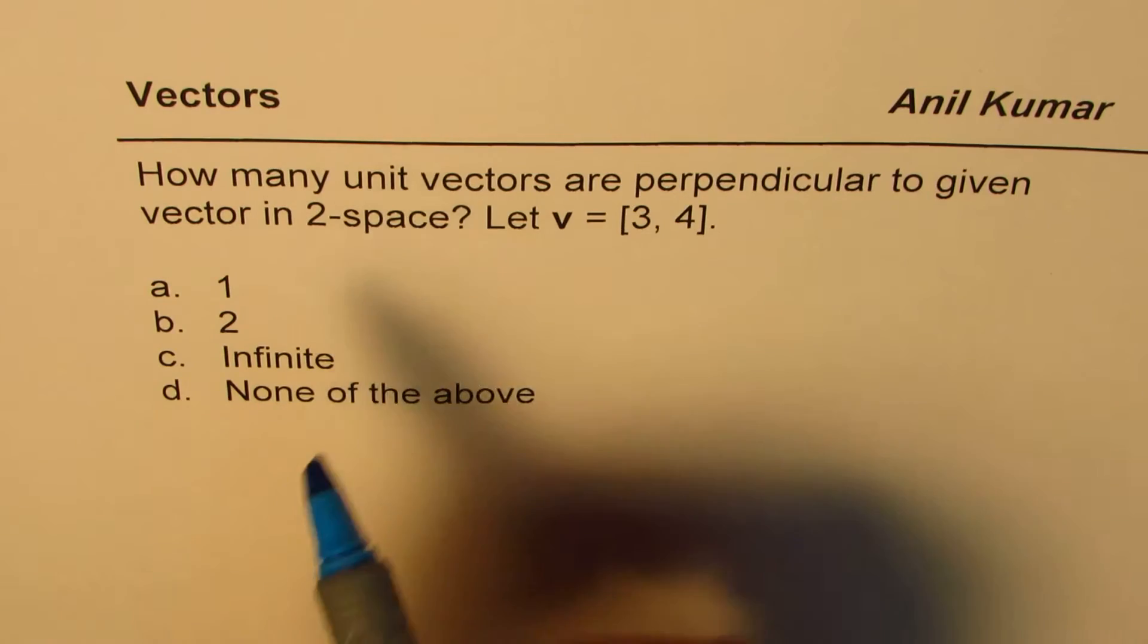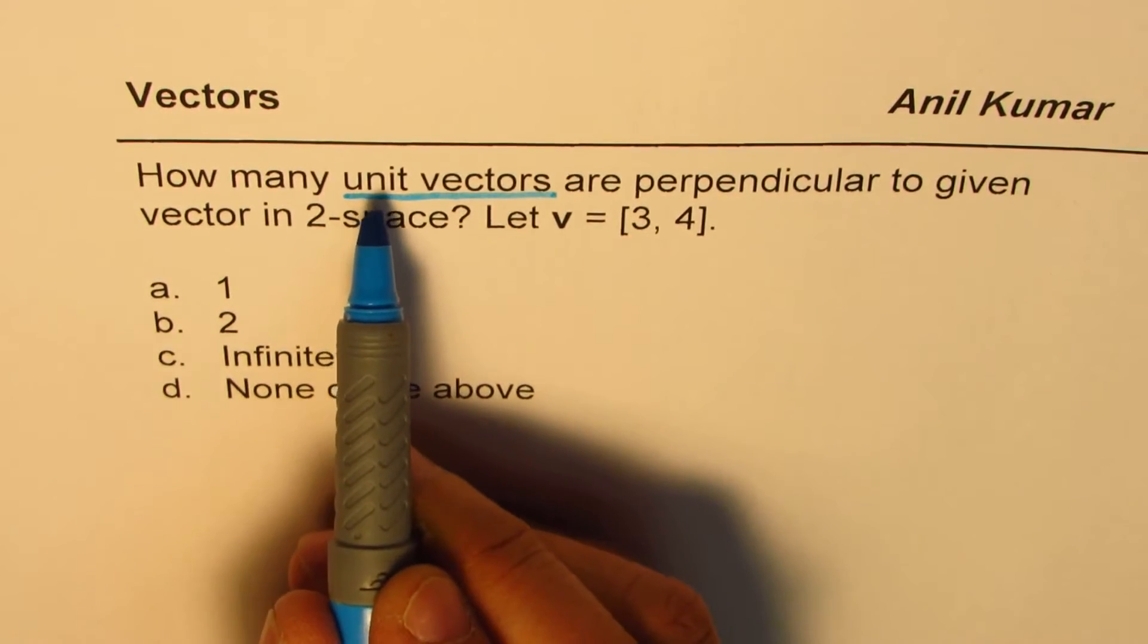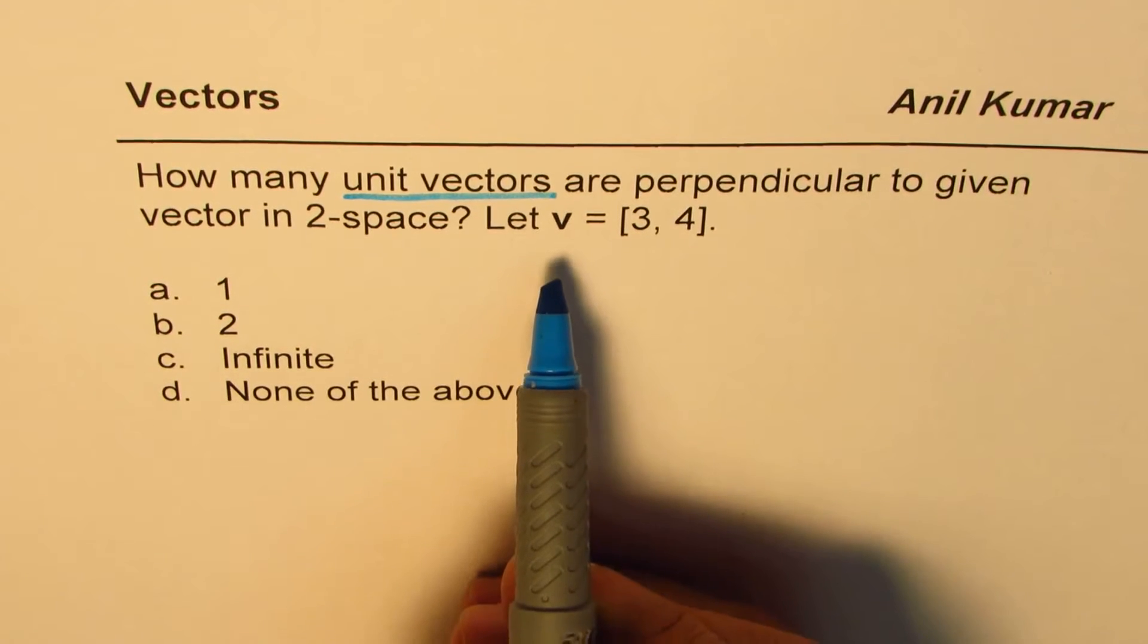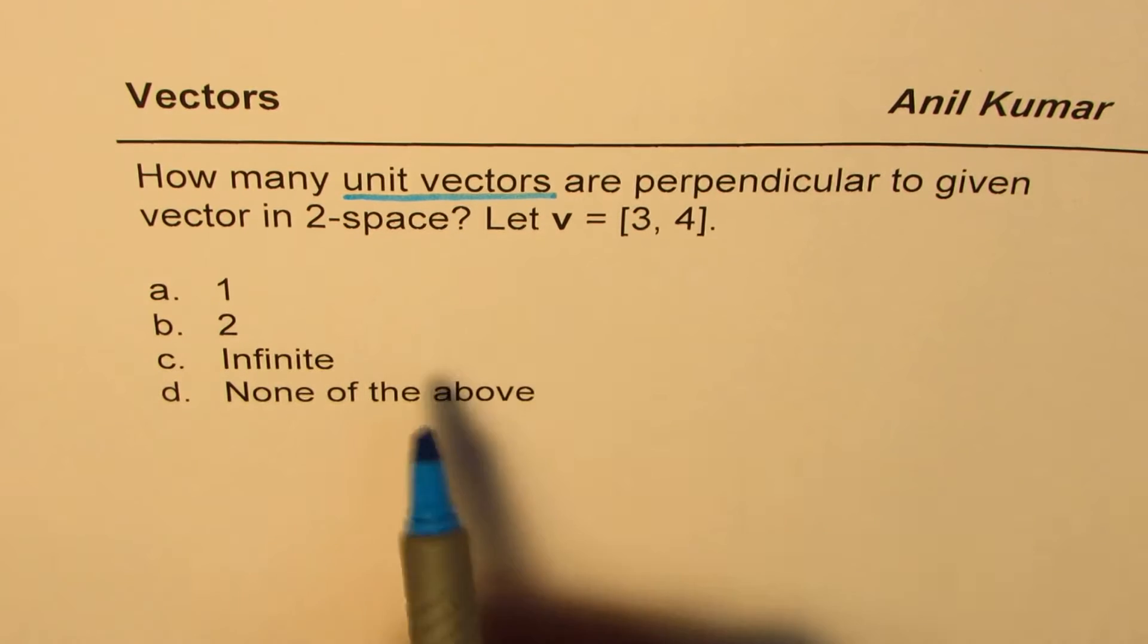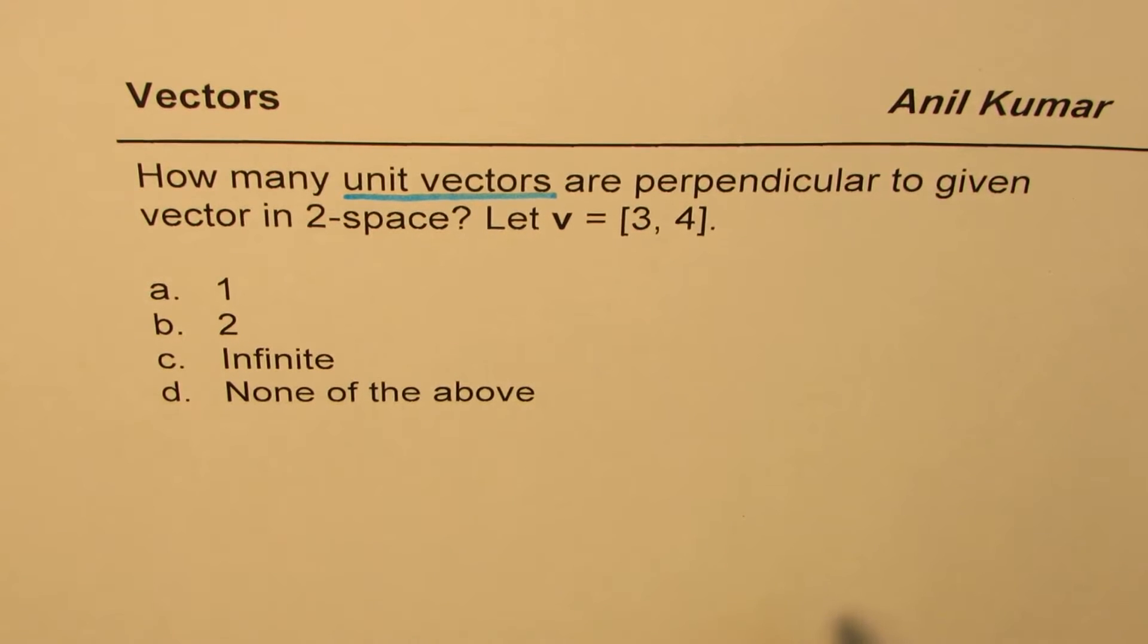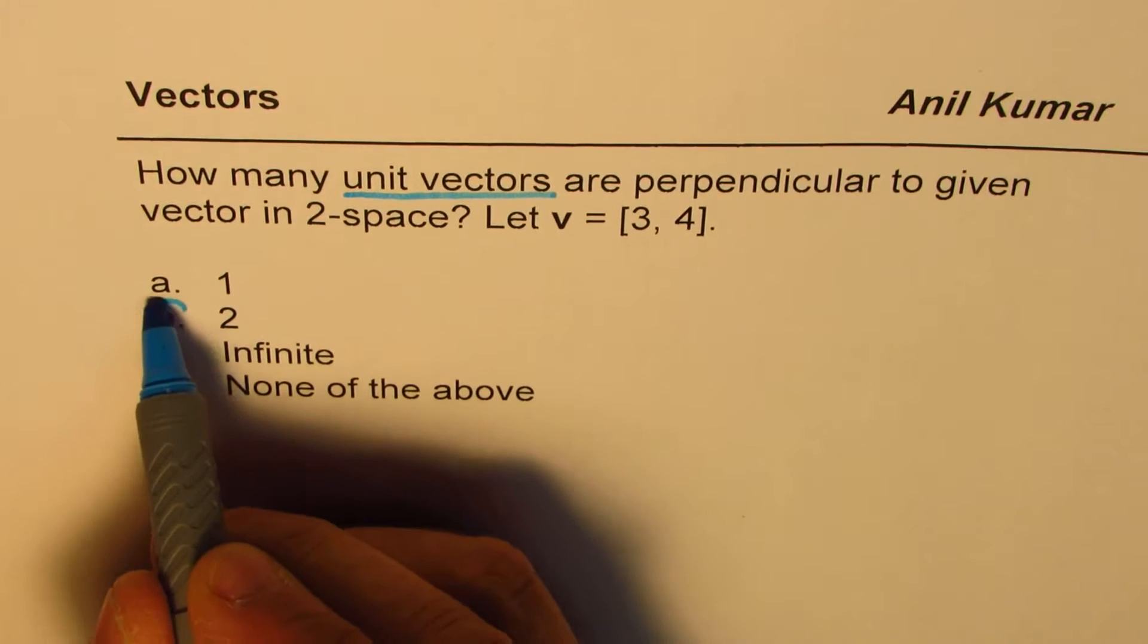Now, the key word here is unit vector. If this was not unit vector, we could have infinite vectors perpendicular to any vector in R2 or 2-space. Since we're talking about just the unit vectors, the answer is 2.